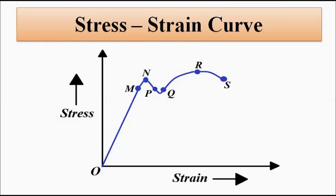It may happen that one material undergoes fracture before reaching point M, another may disintegrate before reaching Q, some before R, and some before S. So this general stress-strain curve indicating various points is an approximation — not every material will follow every stage of it.